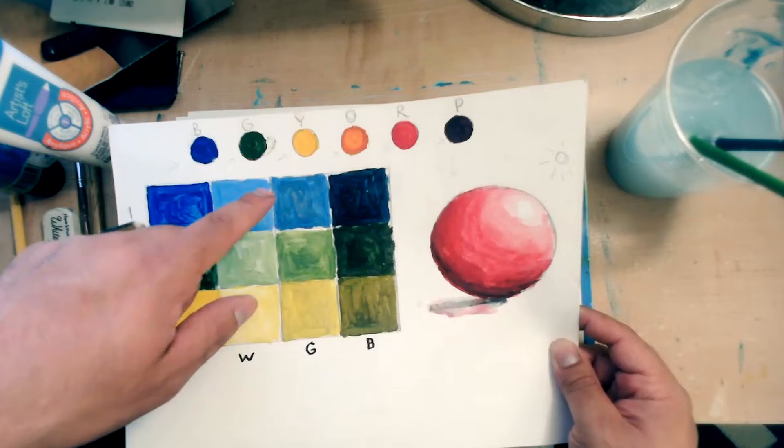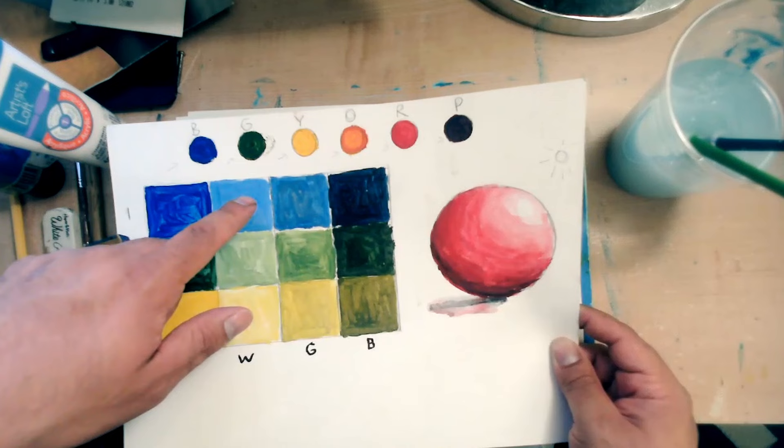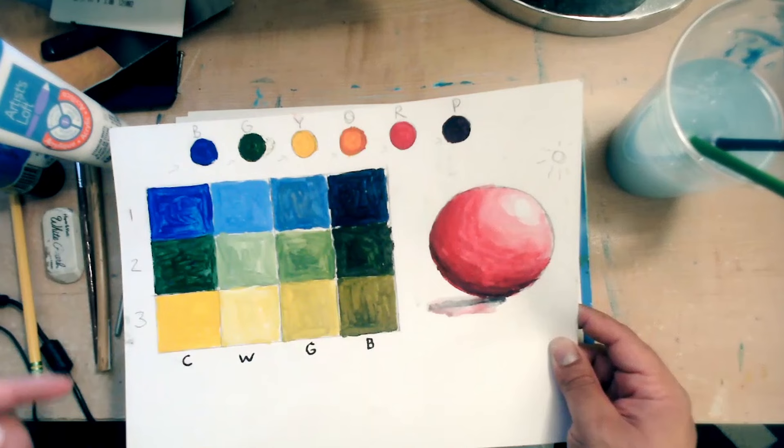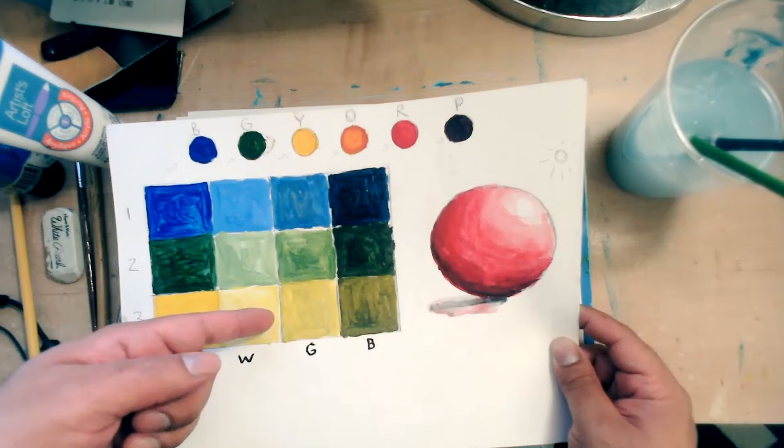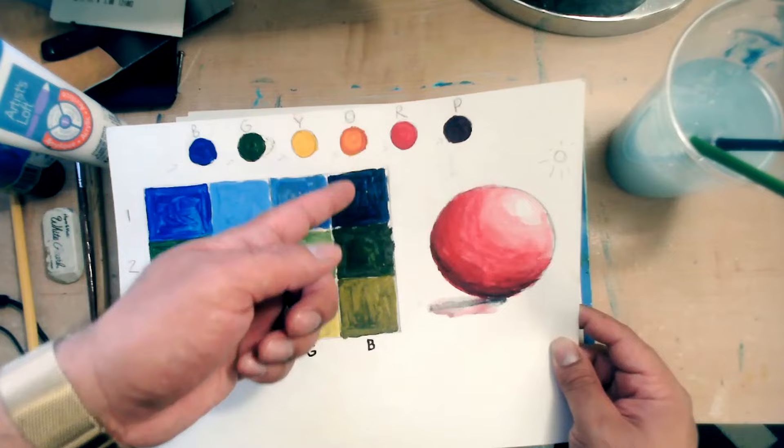Pure color. Color with white. Color with gray. Color with black. We also have green and we have yellow. Notice that tone gets a little bit more dull. Shade looks very dark and the tint looks the lightest.